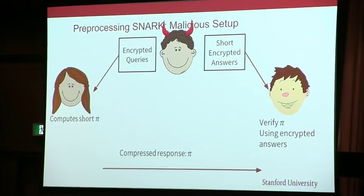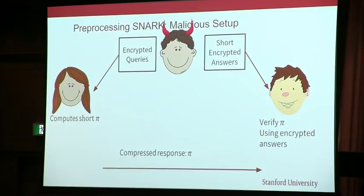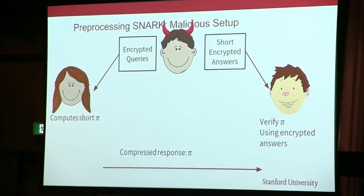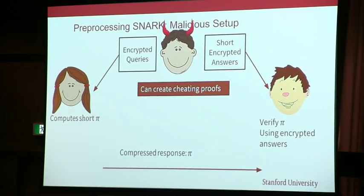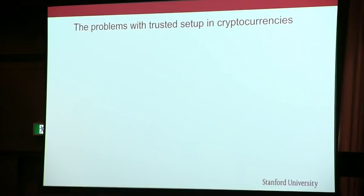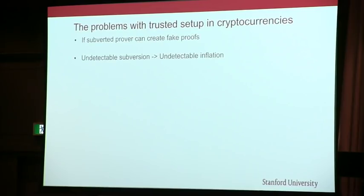What makes it even worse is that you still have the zero-knowledge property, so you wouldn't even be able to tell if someone creates money. It's not like in Bitcoin where, if someone is able to create money, it's very easy to see. In a confidential currency like Zcash, you would not even be able to tell. So undetectable subversion means undetectable inflation.